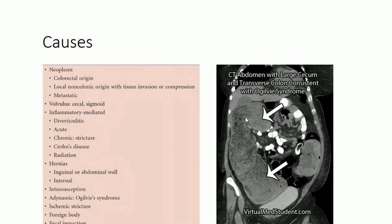Other causes include ischemic stricture, foreign body, and fecal impaction. Fecal impaction is hard stool present mostly on the left side, because on the left side you have harder stool compared to the right side where stool is softer. Foreign body and ischemic stricture can also cause large bowel obstruction.